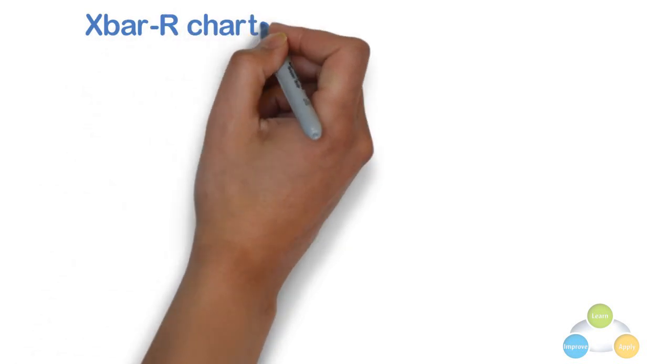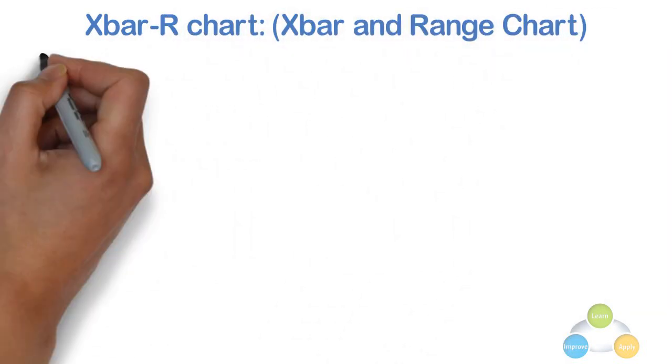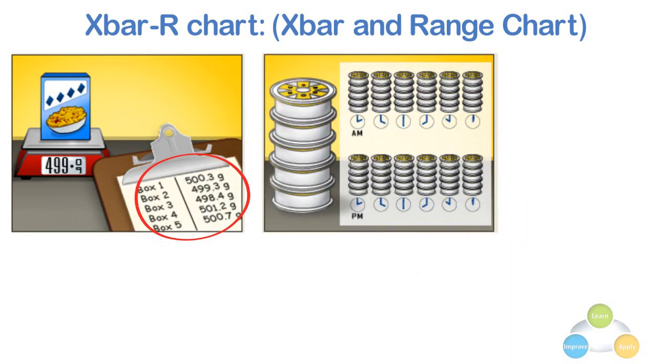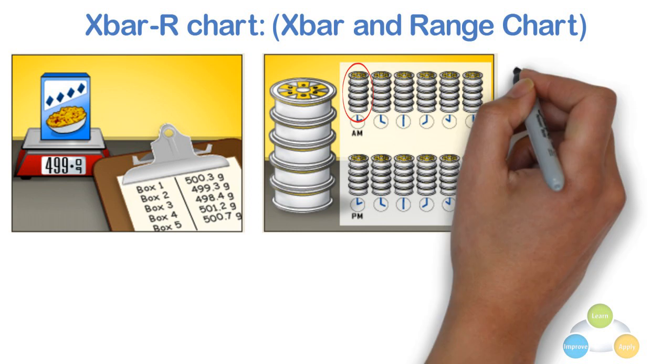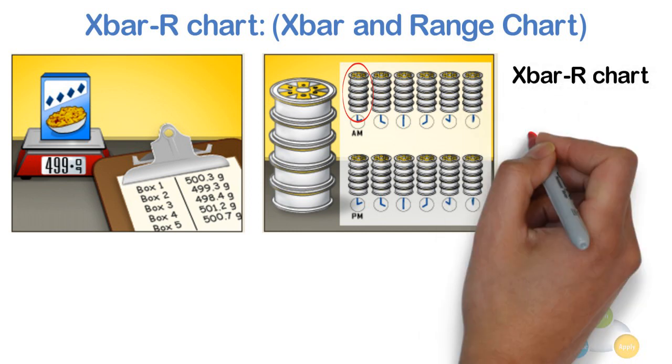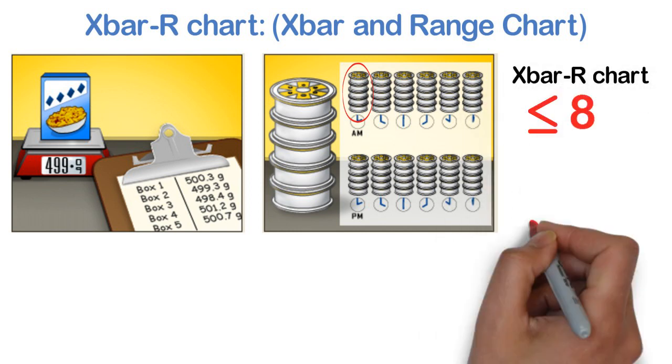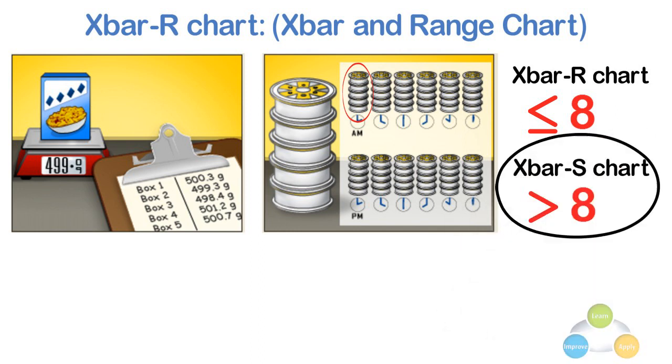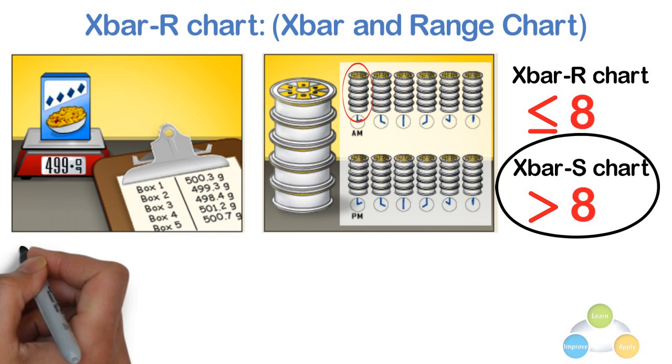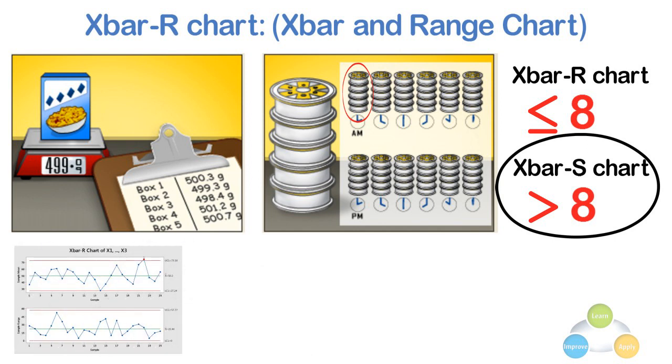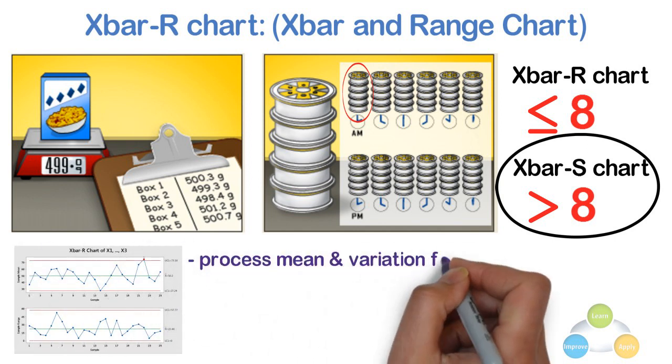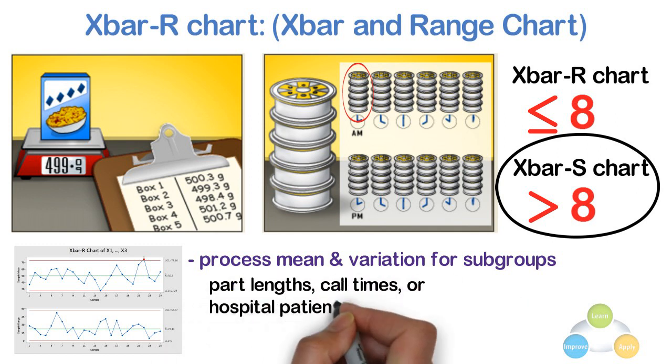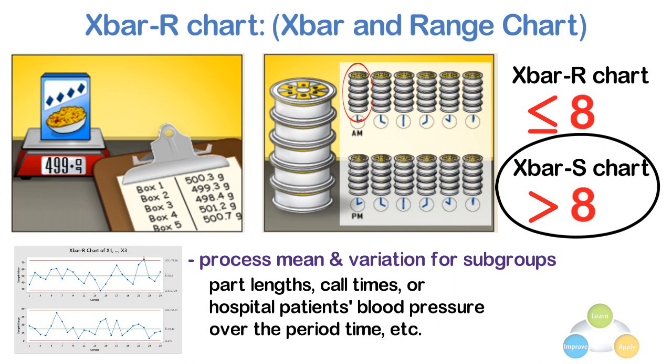X bar R chart, i.e., X bar and range chart. X bar R chart is used when data is continuous and collected in subgroups. To use X bar R chart, subgroup size must be 8 or less than 8. If it is more than 8, we have to use X bar S chart. We will see X bar S chart at the end of this video. We can use X bar R chart to monitor the process mean and variation for subgroups of part length performance, call times, or hospital patient's blood pressure over time.